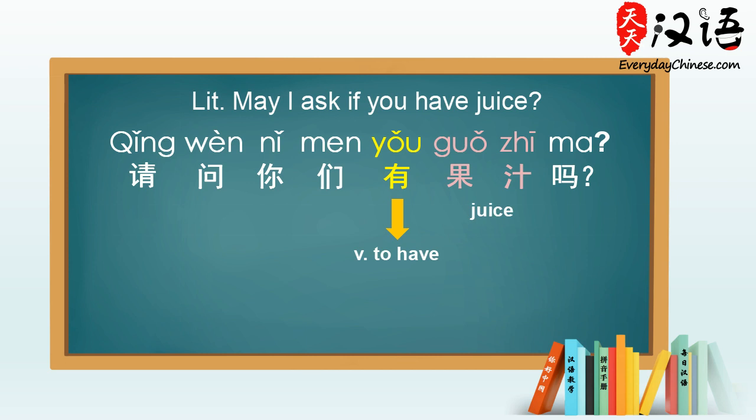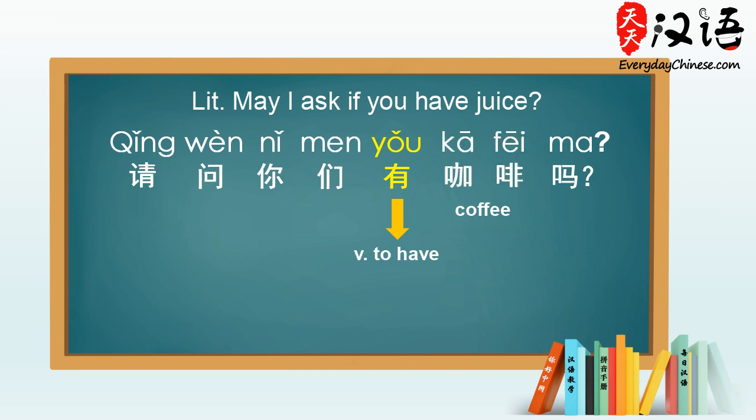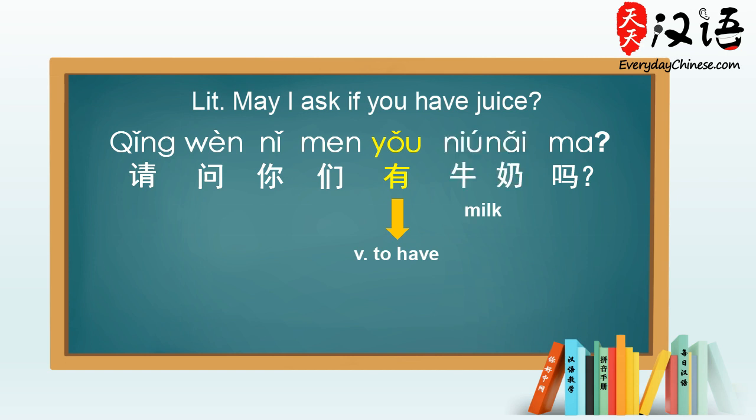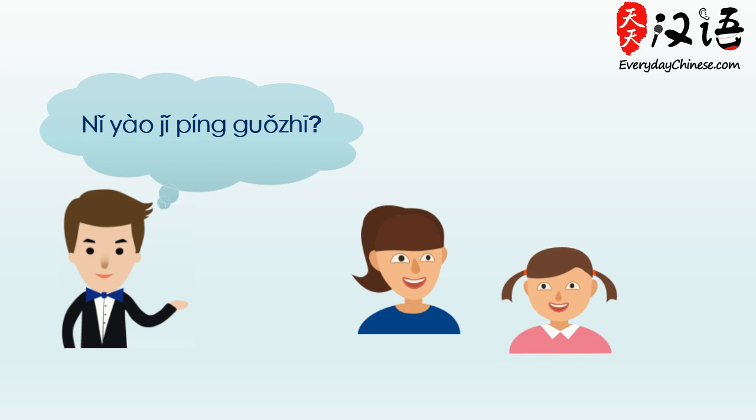For example: do you sell coffee? 你们有咖啡吗? Do you sell milk? 你们有牛奶吗? Did you get it? 你要几瓶果汁? 我要一瓶.